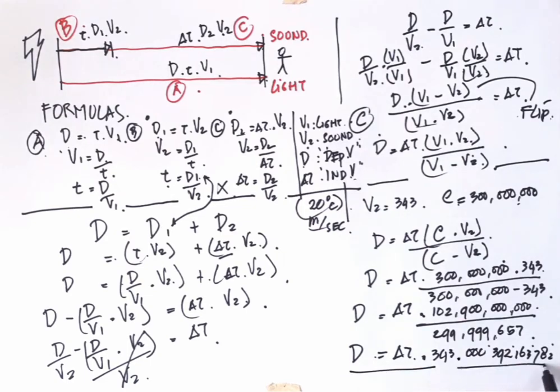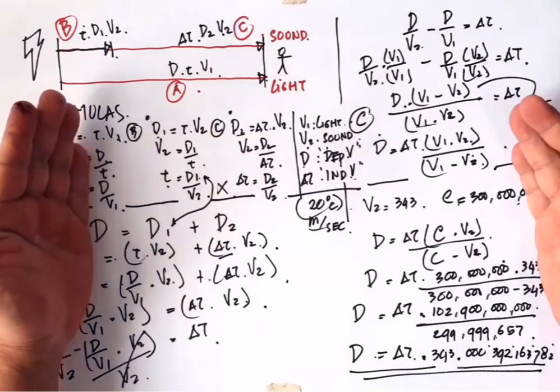It will be D equal to delta T multiplied by 343.000392163782. This is our coefficient and this is our calculation.